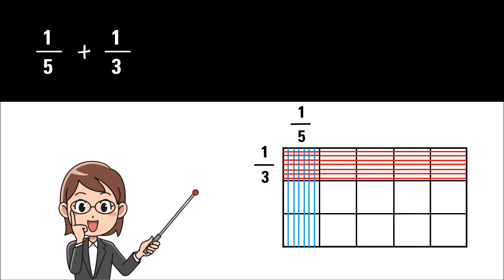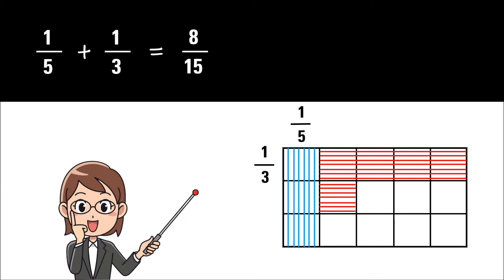After filling with horizontal and vertical lines, the result will show four boxes with both horizontal and vertical lines. Move the horizontal lines to an empty box. Now the boxes that are filled with horizontal or vertical lines represent the sum and will become the new numerator. The total boxes will represent the new denominator.